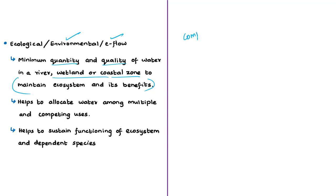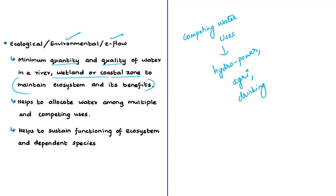Environmental flow assumes importance when there are competing water uses and where flows are regulated. E-flow helps allocate water among multiple and competing uses in a watershed or river basin — such as for hydropower projects, industrial use, drinking water, or irrigation. The need to maintain ecological flow is that it helps for integrated management of river flows to meet the needs of people, agriculture, industry, energy, and ecosystems within the limits of available supply. Ensuring ecological flow will help sustain the functioning of an ecosystem and its dependent species, including human beings.